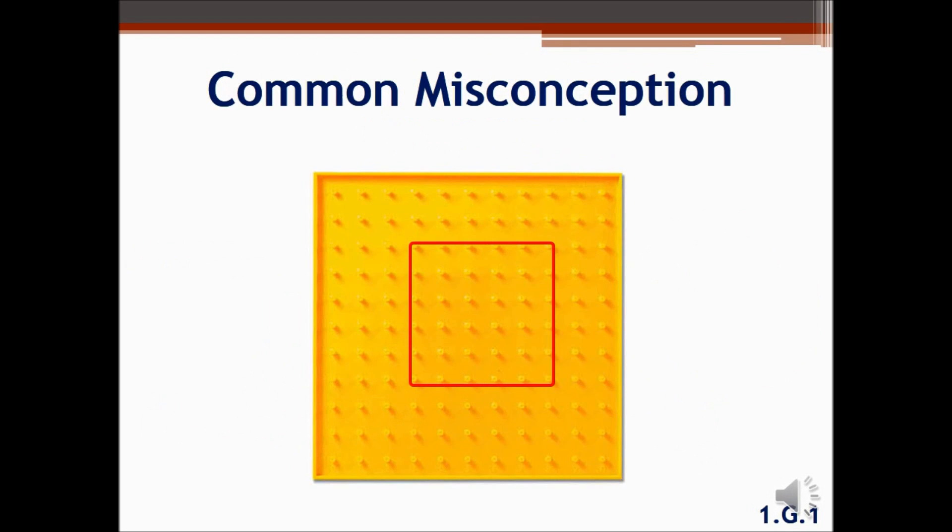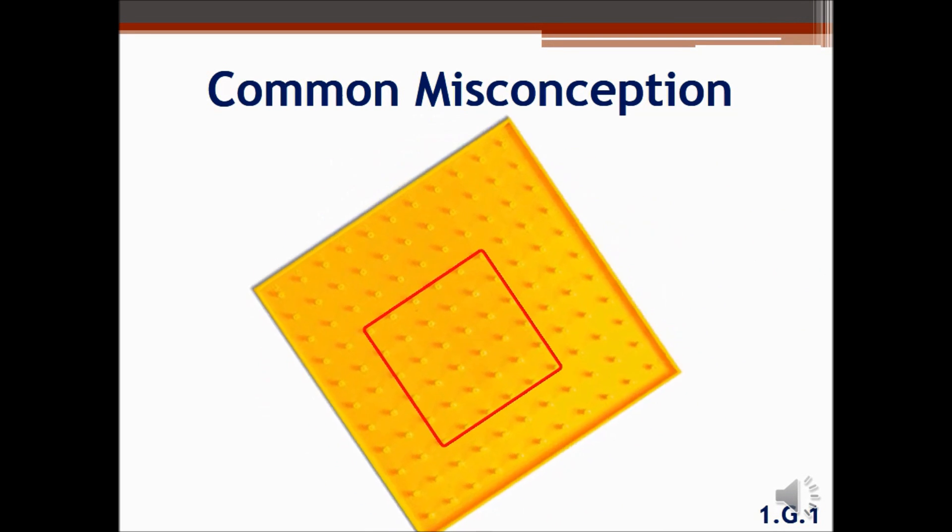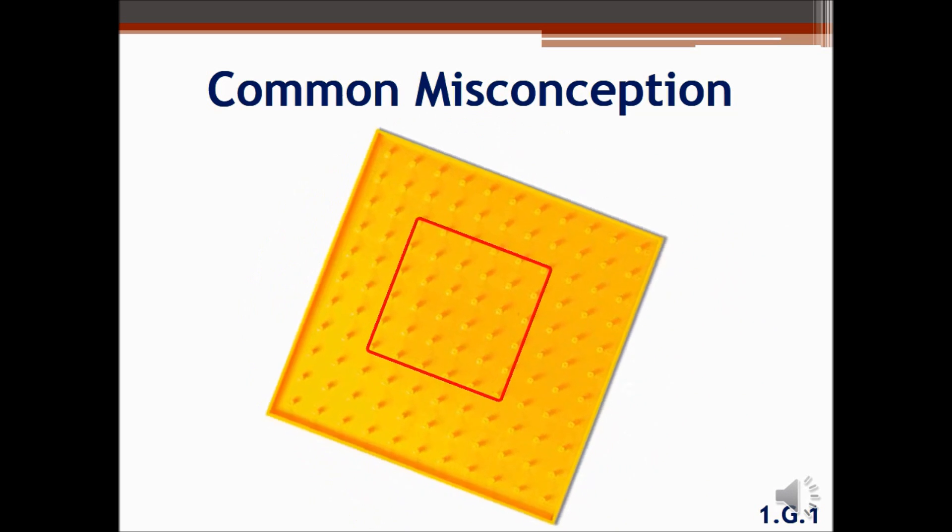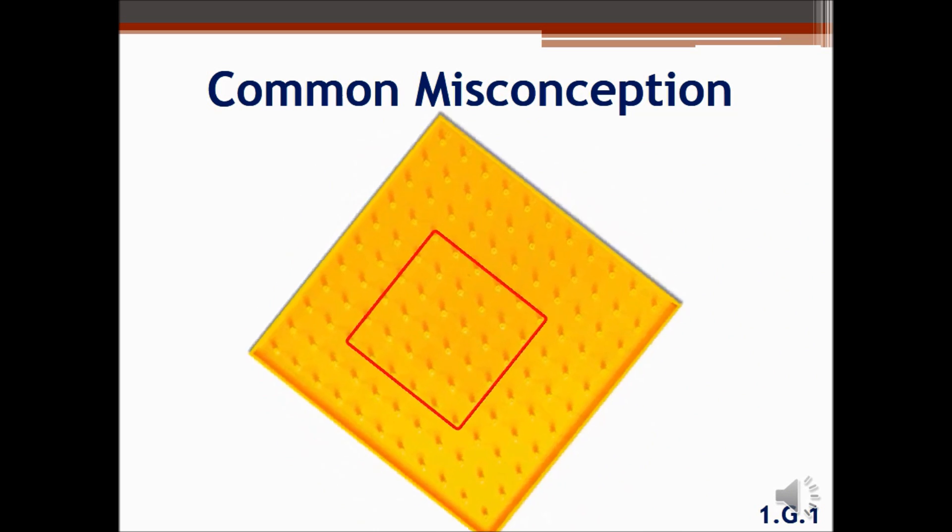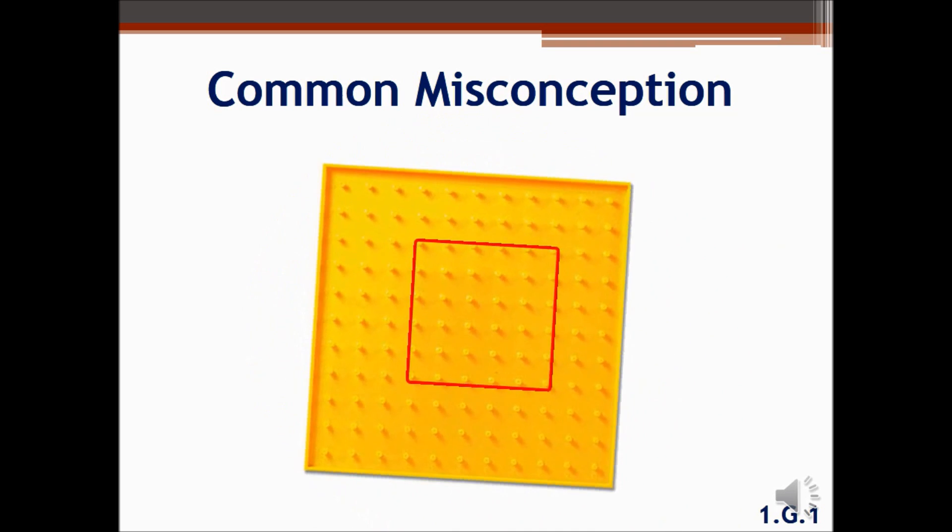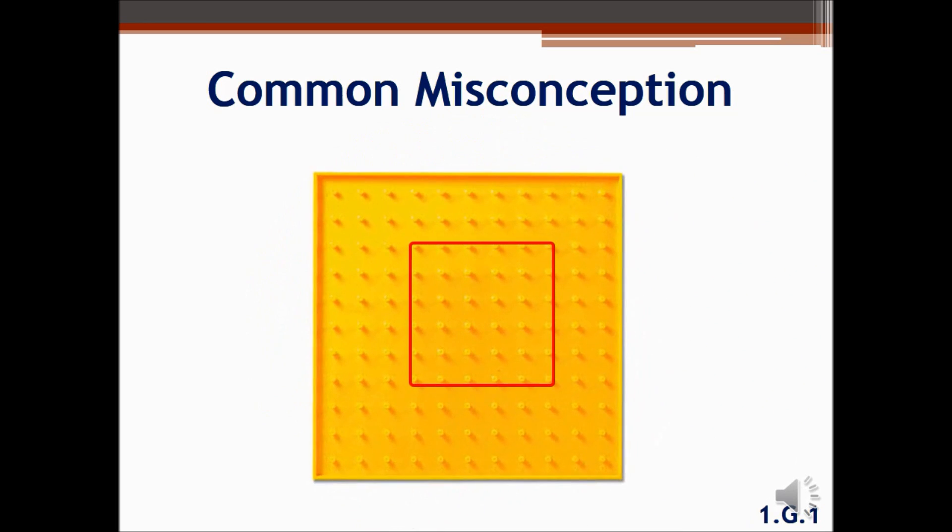Students may think that a square that has been rotated is no longer a square, but may say diamond. By providing students lots of opportunities to handle and manipulate shapes, this misconception will be rectified. The teacher should also be sure to frequently hold shapes upside down and turn them around so students can see them in many positions. Lastly, by focusing on the defining attributes of a shape, students can see that a square has four equal sides and four right angles, even when turned.